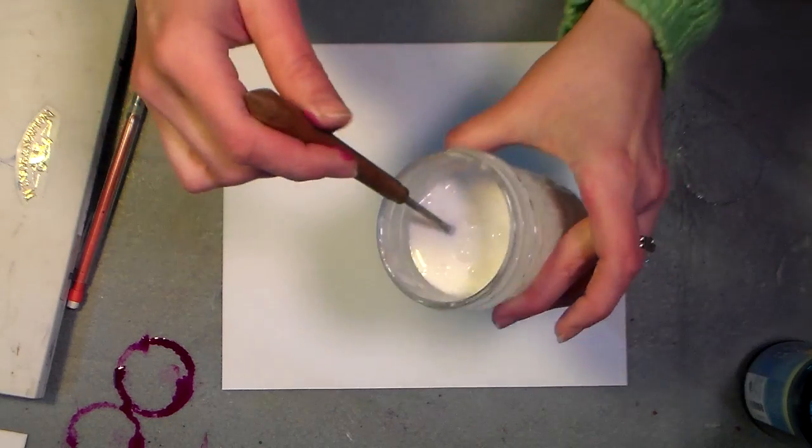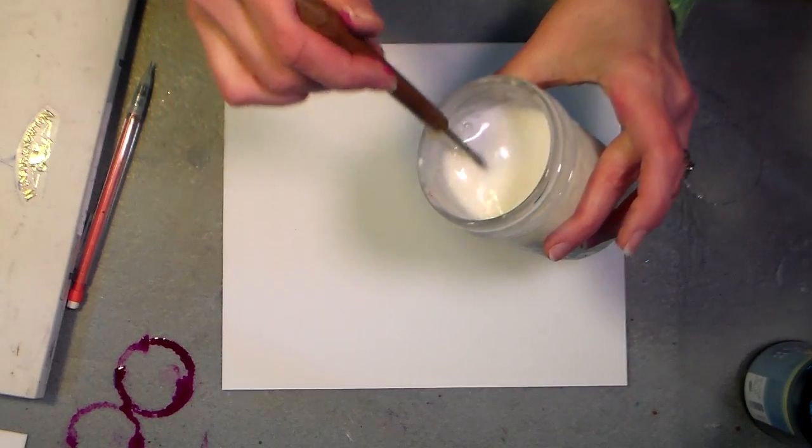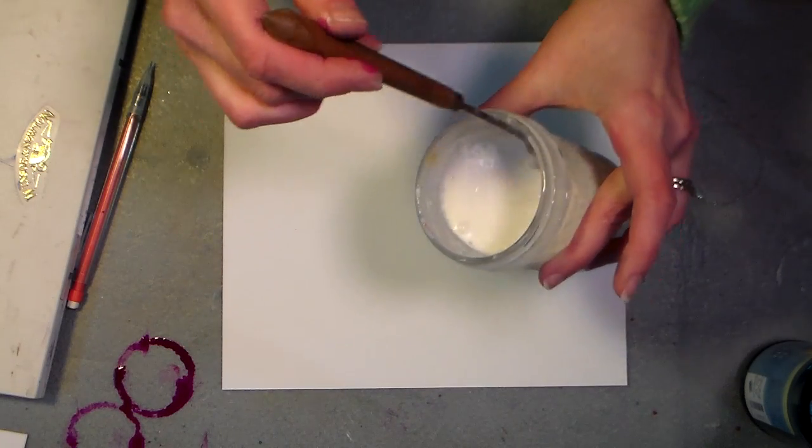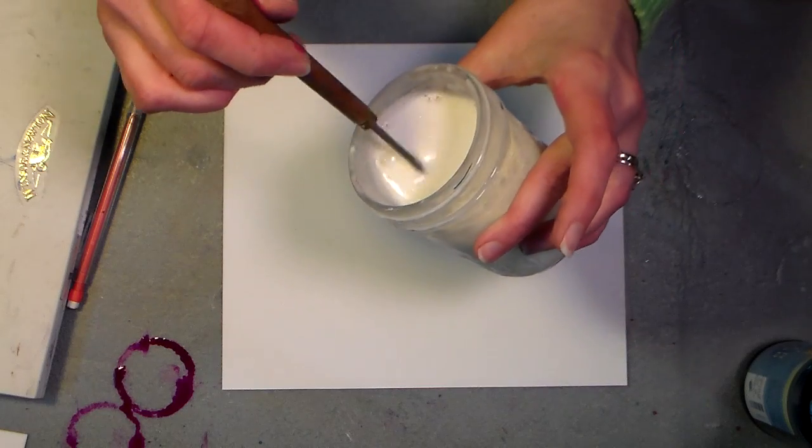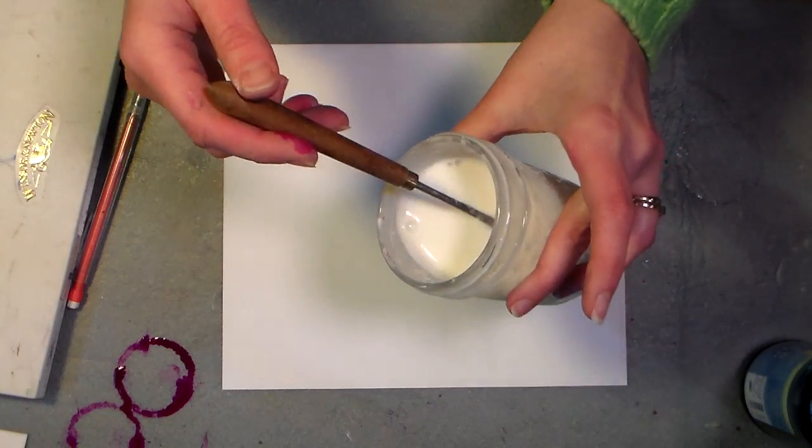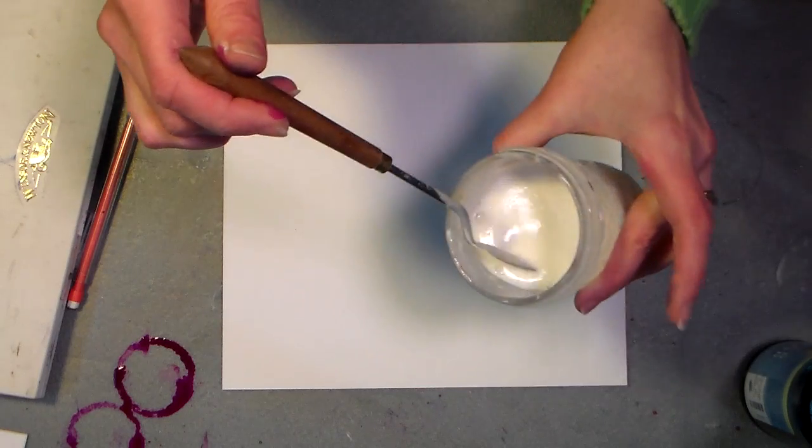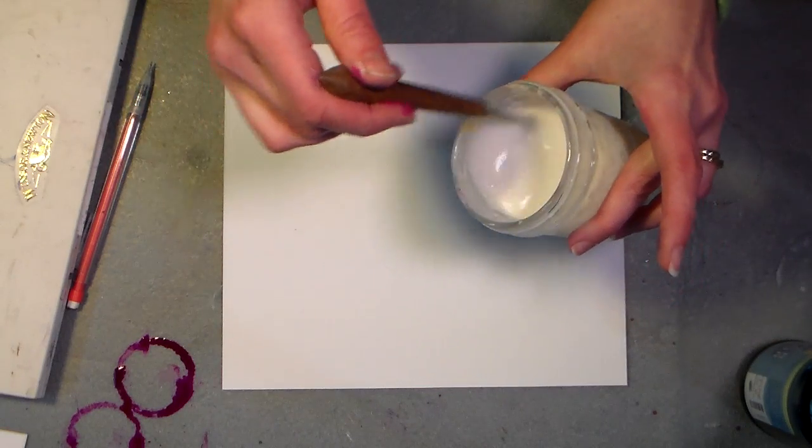So what I have here is a mixture. This is actually a request, somebody sent me a picture of some paint they had seen for sale, and they wanted to know if I could duplicate it, and I think I came pretty close. So what I did was I took two tablespoons of cornstarch, two tablespoons of white glue, just Elmer's glue, and half a cup of water and mixed it up in this canning jar here.